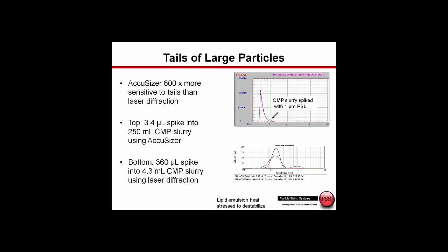One of the real strengths of single particle optical sizing is the ability to be able to measure a few large particles, the tails of distributions. I show one example here. This is actually a sample used in the microelectronics industry called a chemical mechanical polishing slurry. In the upper right, what we see is an AccuSizer result. We took a 1.36 micron polystyrene latex standard, took 3.4 microliters of the standard, spiked it into 250 ml of the CMP slurry, and found this additional peak. We then took the same CMP slurry, measured it on a laser diffraction analyzer, and before we found the second peak, we had to spike 360 microliters into only 4.3 ml of the CMP slurry. This proves that the AccuSizer is over 600 times more sensitive to the presence of a few large particles than the laser diffraction technique.